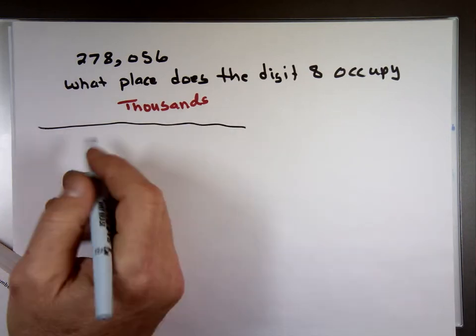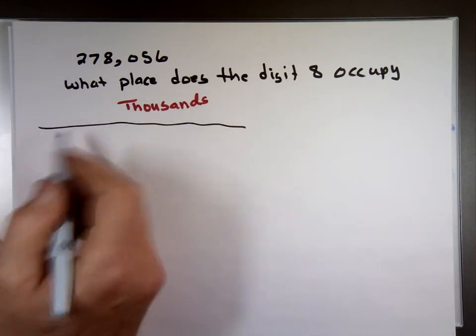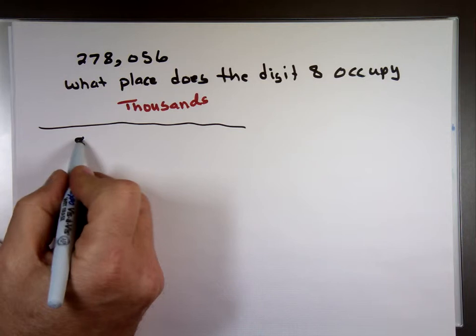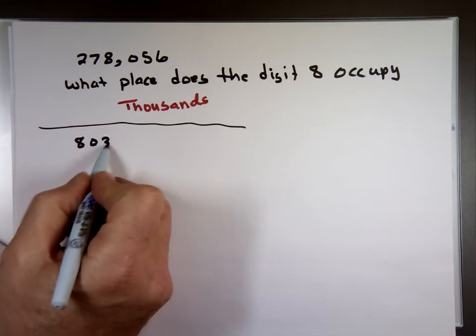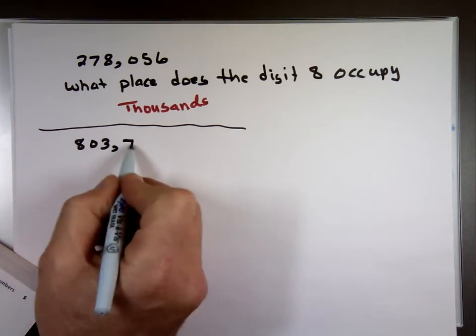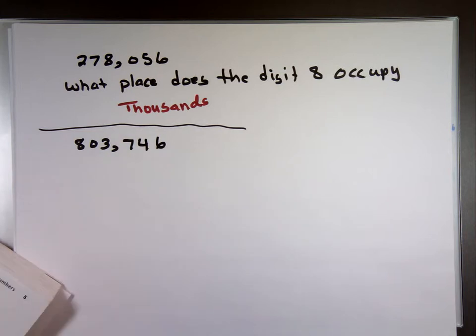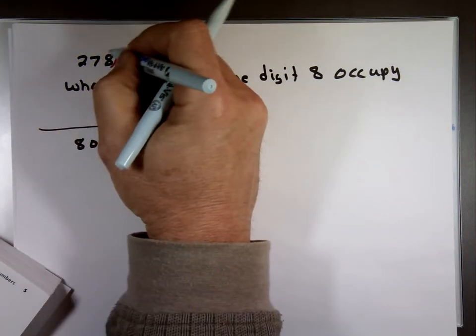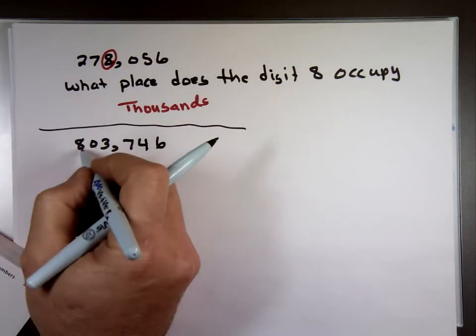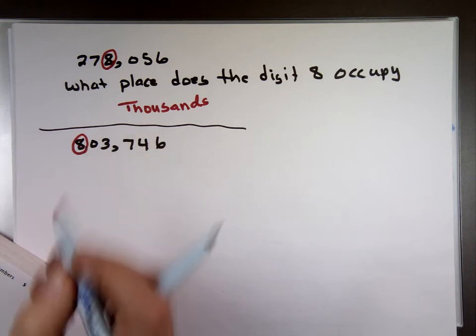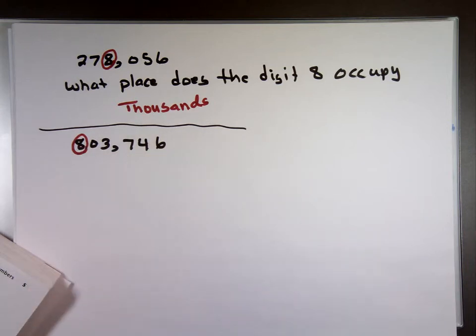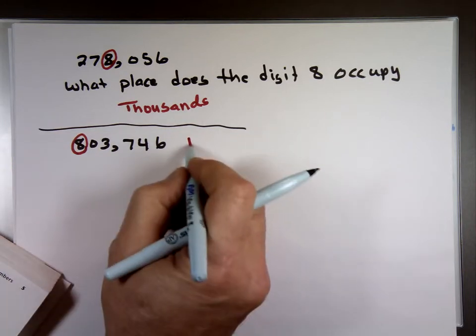If I change the number, and again, we're talking about the same digit, 8. If I change that to 803,746. Notice the 8 here was this one. That's a thousand. The 8 here is right here. So, is that 10,000? Is that a million? What is it? 100,000.